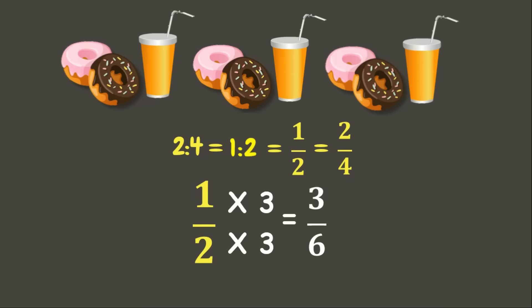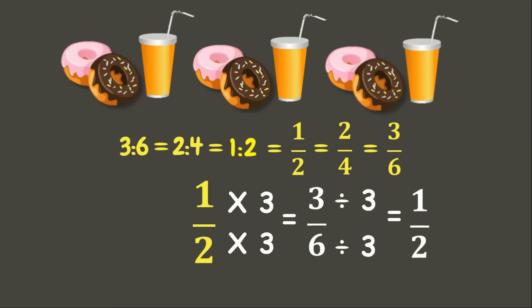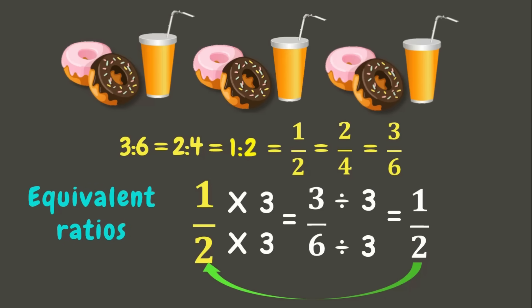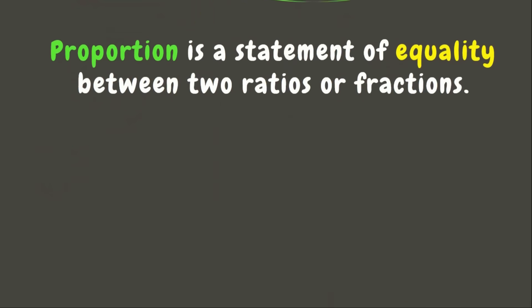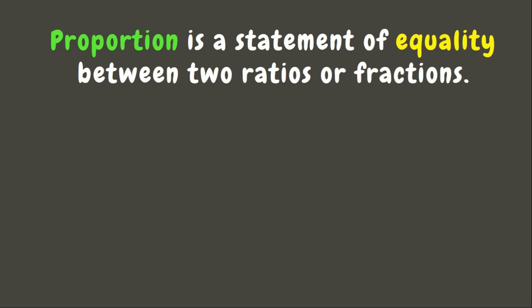This means one is to two, two is to four, and three is to six are all equivalent ratios. We can also get the equivalent of a ratio by dividing both quantities by a common factor. Three divided by three is one, and six divided by three is two, so three is to six is equivalent to one is to two. These are equivalent ratios, and this also shows proportion. Do you know what proportion is?